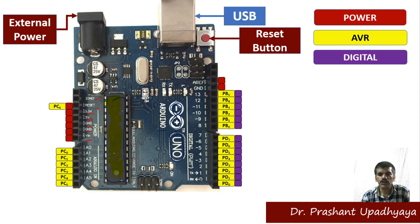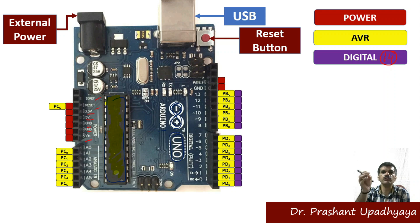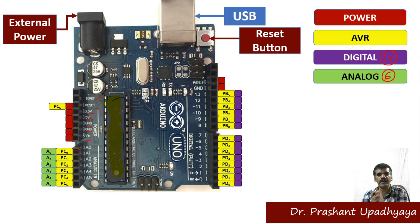We have digital pins numbered 0 through 13 — so there are 14 digital pins in total. For digital signals we connect to these pins. We also have analog pins: A0, A1, A2, A3, A4, A5 — giving us six analog pins. Digital pins handle 0 and 1 signals, while analog pins handle varying voltage levels.